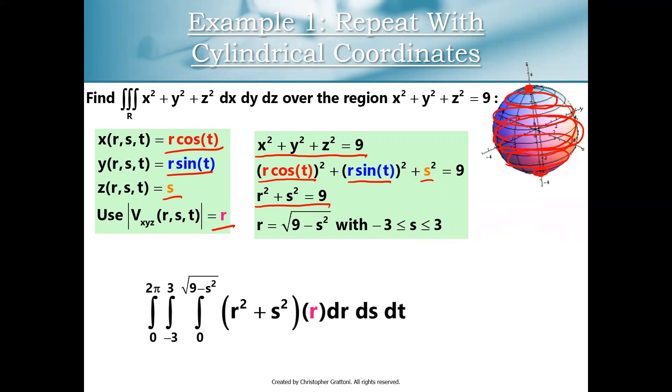That also gives us enough information to set up and compute our integral because we've got our volume conversion factor. We know that x squared plus y squared plus z squared simplifies to r squared plus s squared. And then now we know that dr is going to go from 0 to the square root of 9 minus s squared. We know what our radius needs to be to fill out each of these circles and turn them into filled disks. We know that s is going to vary from negative 3 to 3 as we go from the south pole all the way to the north pole on this globe. And then t, you can see we have a full rotation on the xy plane from 0 to 2 pi. So that's our setup.